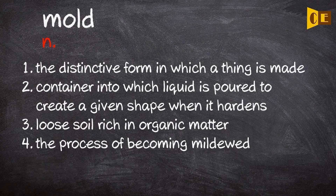Noun. 1. The distinctive form in which a thing is made. 2. Container into which liquid is poured to create a given shape when it hardens. 3. Loose or rich in organic matter. 4. The process of becoming mildewed.